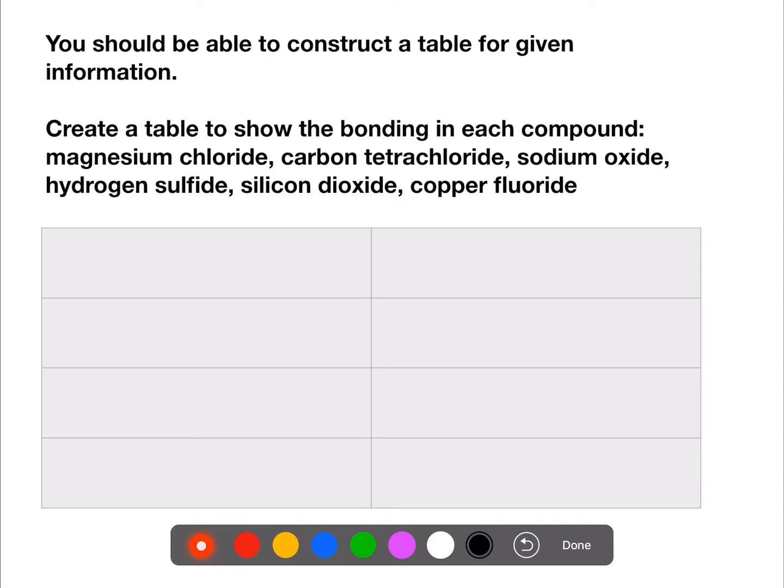We have a mixture of compounds which are made up of non-metals and those which are made up of metals and non-metals together. This means that our headings for the types of bonding will be ionic and covalent.